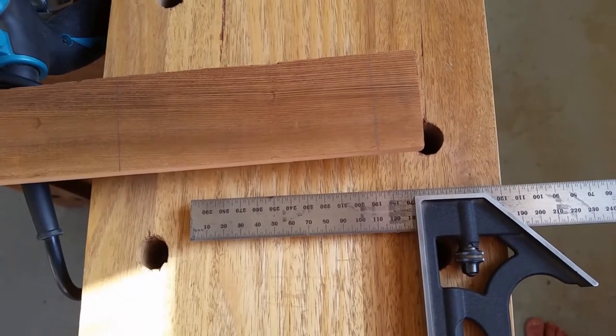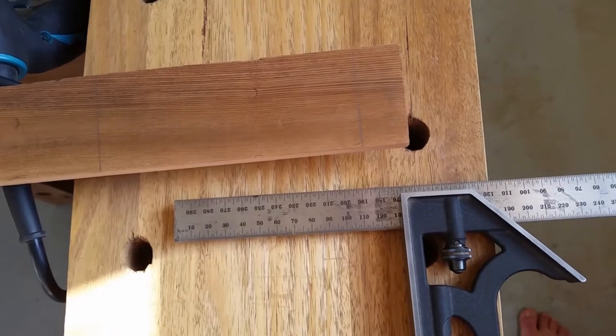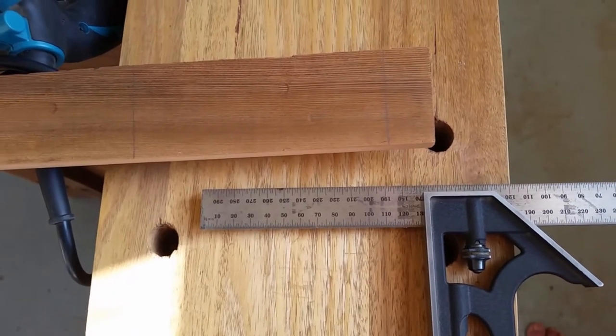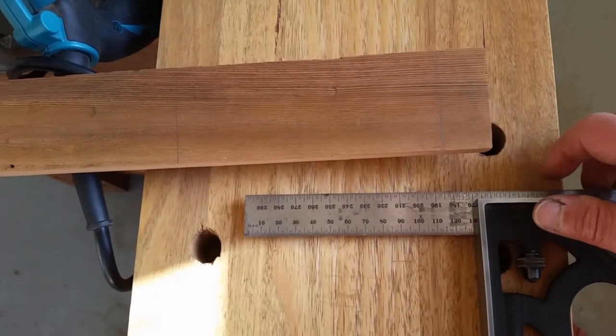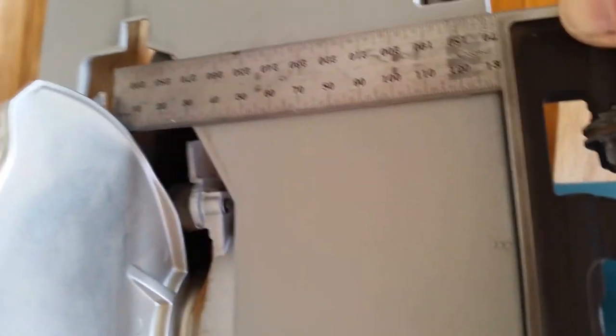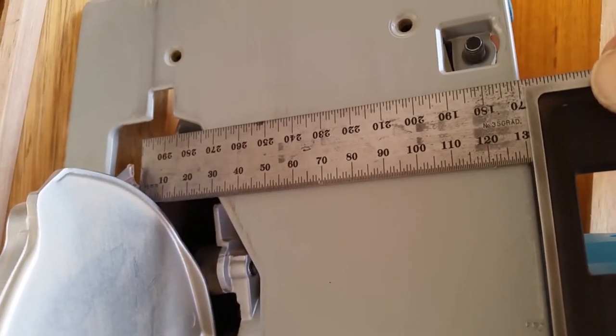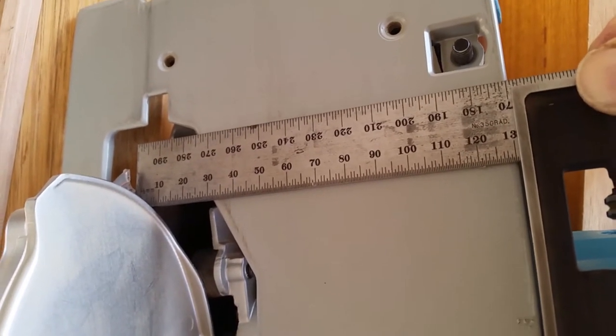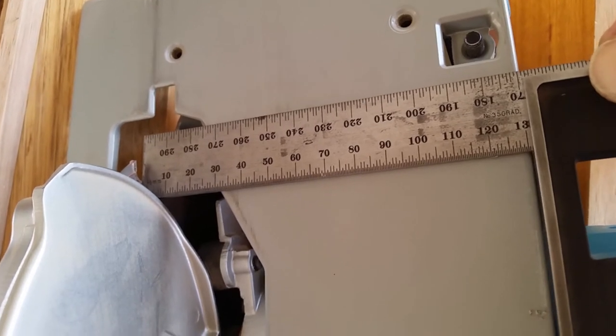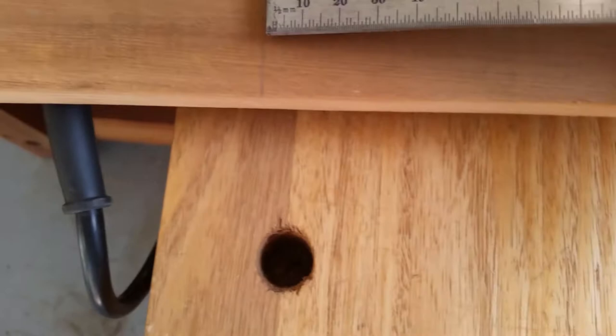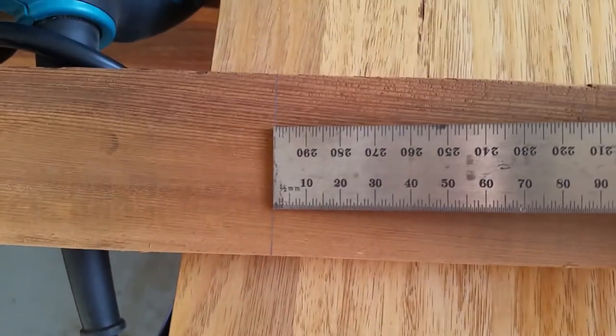That way it will be much more accurate. This here is the distance from the blade to the base so the protruding part of the bar needs to be exactly that long. I will mark the line to drill the hole from here.